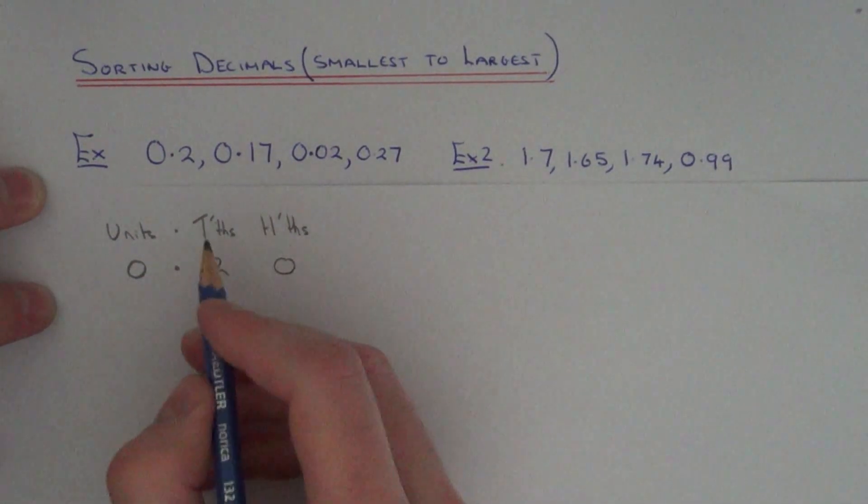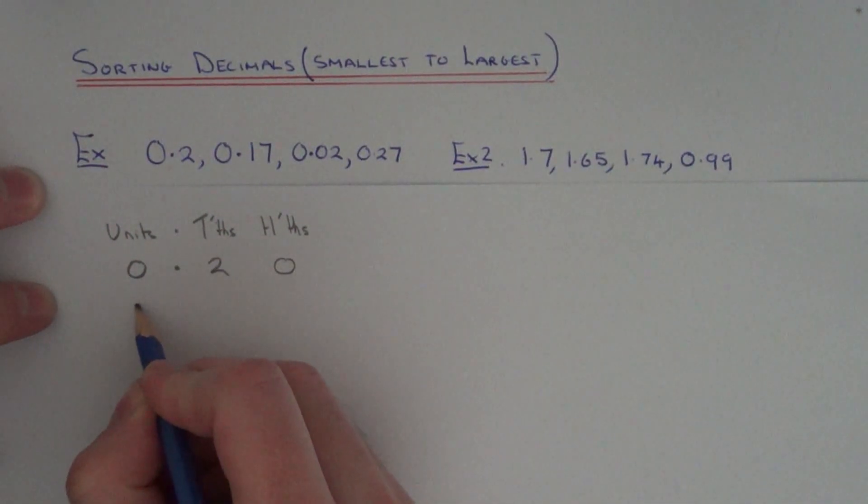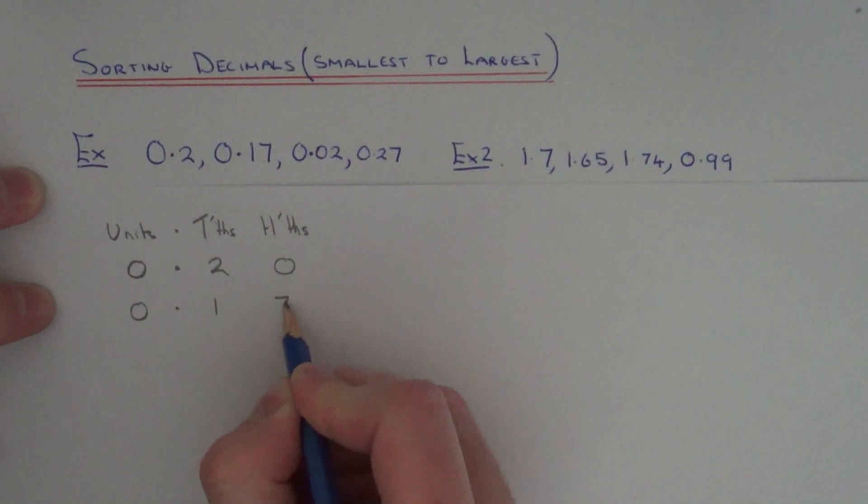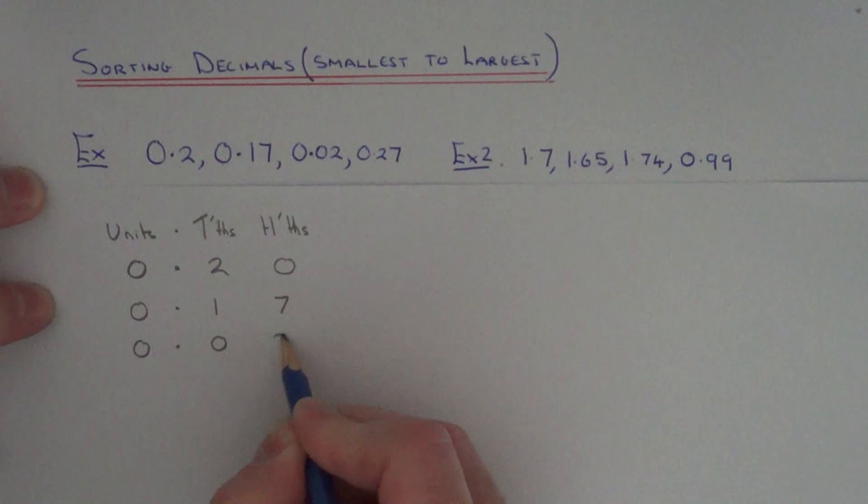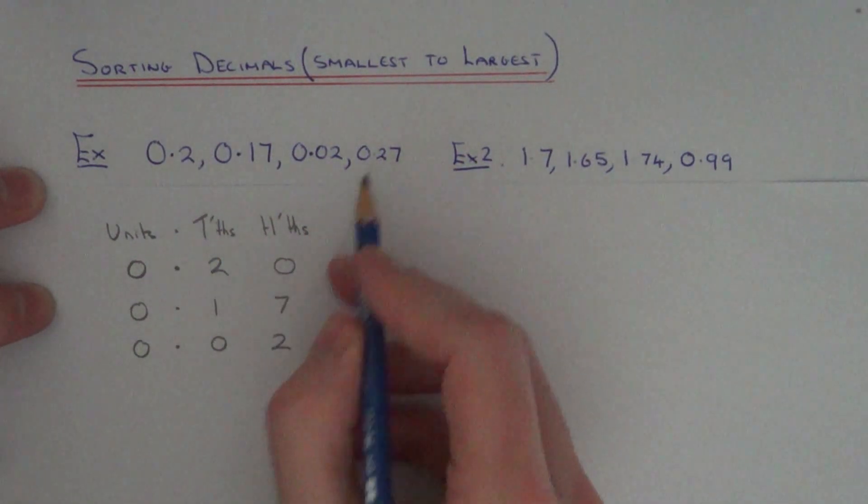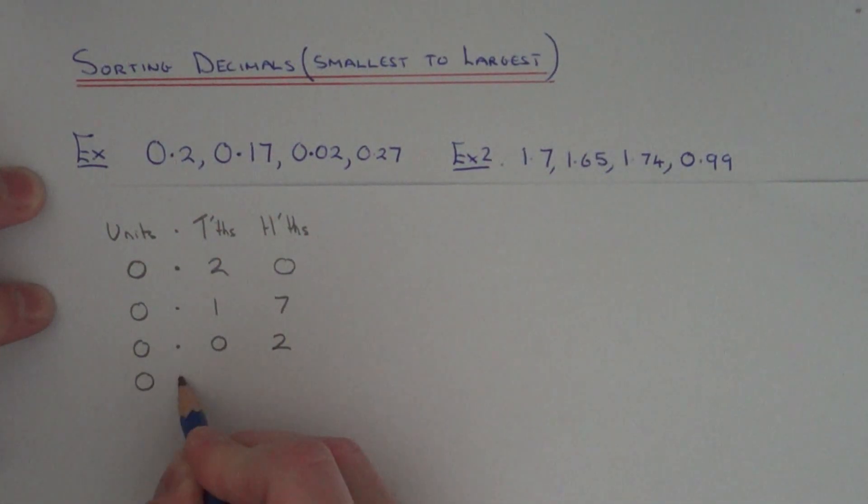Your next decimal is 0.17. So we've got 0 units, 1 tenth, 7 hundredths. The next decimal is 0.02. And the final one is 0.27.